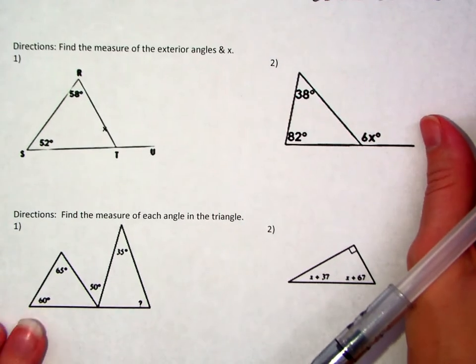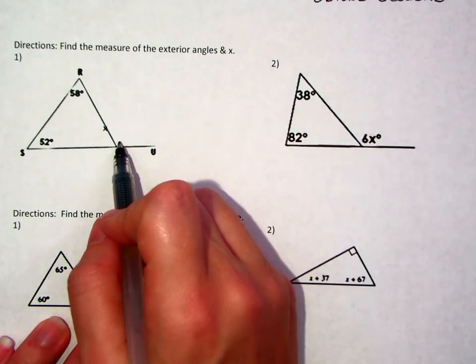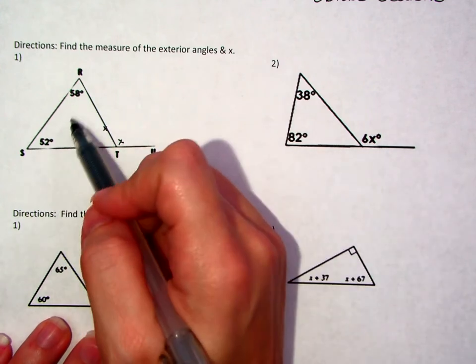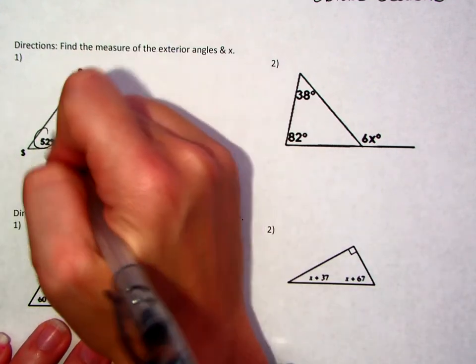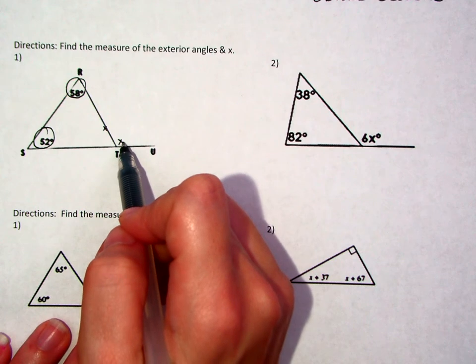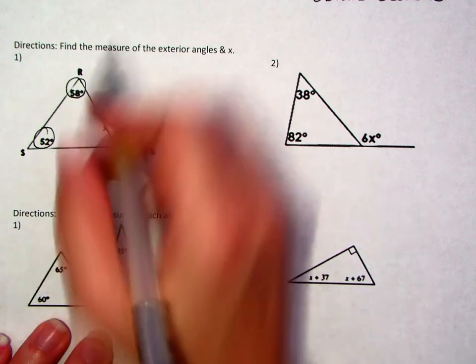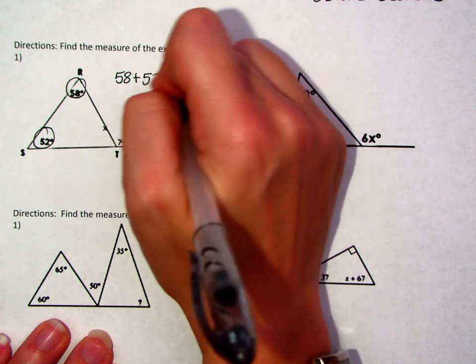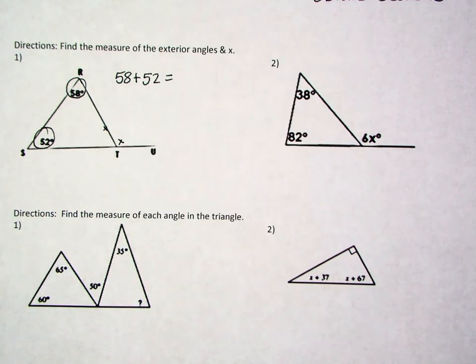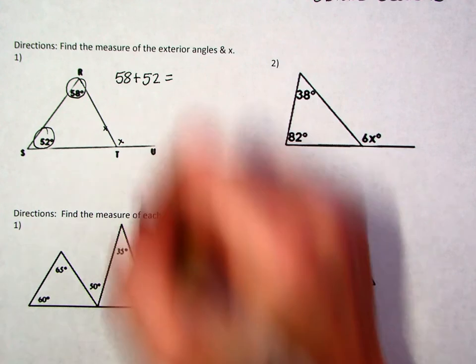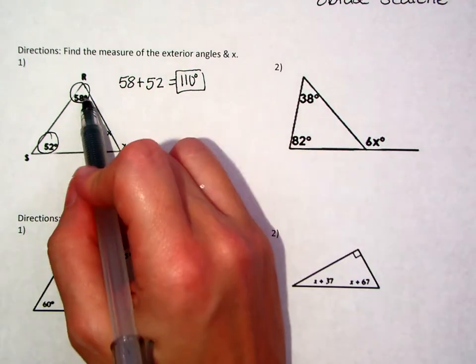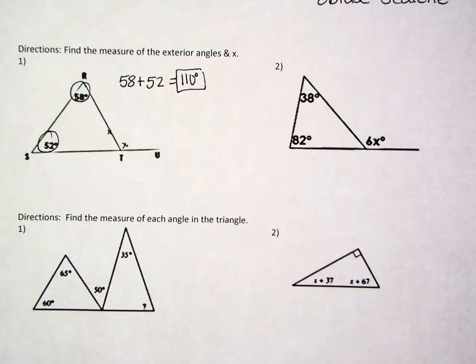On the next set of problems, we're dealing with the exterior. And we're supposed to find the measure of angle x. x is supposed to be right here. So the idea is that the two remote interior angles, the ones that are farthest from this exterior angle, not touching, the two remote interior angles have a sum that would equal the exterior angle here. So really what you want to do is just do 58 degrees plus 52 degrees, and you would get that that exterior angle is 110 degrees, because these two added together equal that exterior angle.